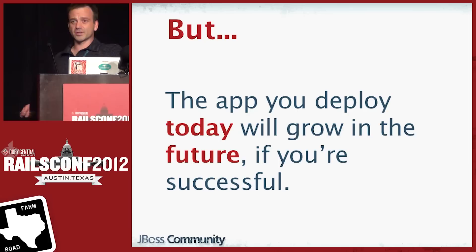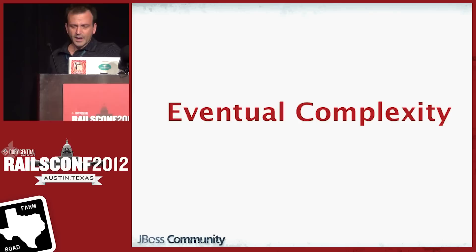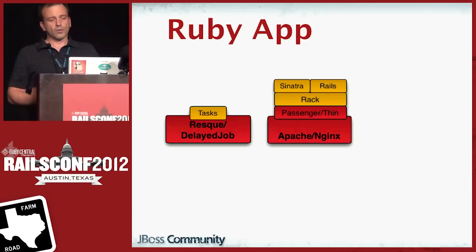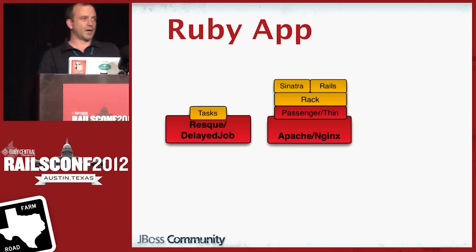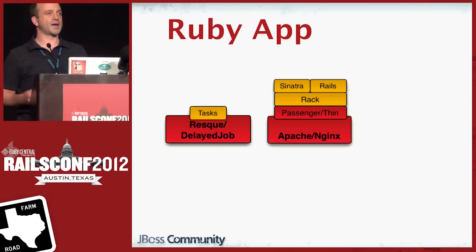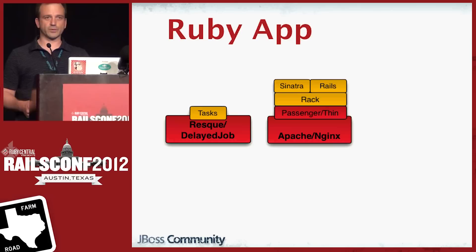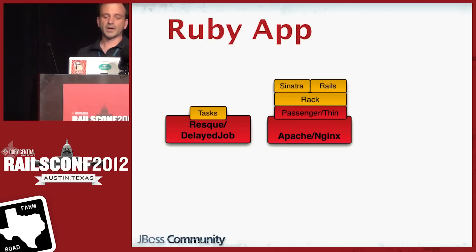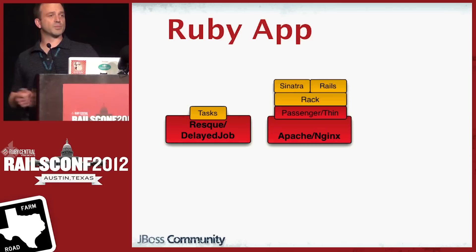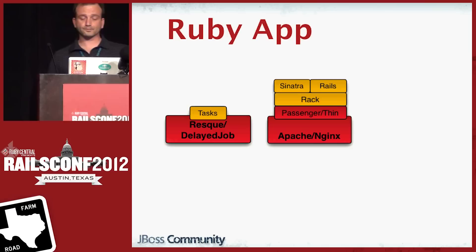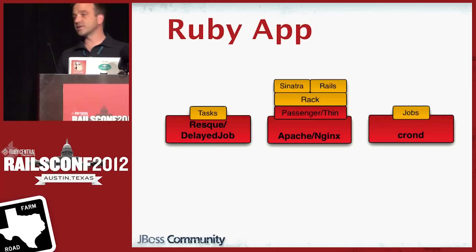But if you're successful — and we all want to be successful — your application is going to grow and become a little bit more complex. What kind of complexity could be introduced? How about delayed job? Most applications have some kind of task that needs to happen in the background. For example, a user signs up and you want to send an email. You don't want the user to have to sit and wait for you to format that email, open a connection to an SMTP server, and send it off. You want all that to happen in the background and have control return to the user immediately.